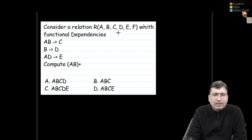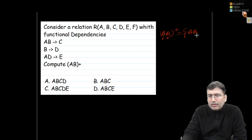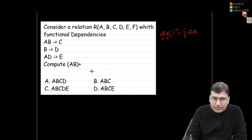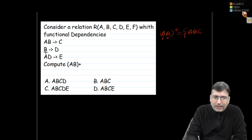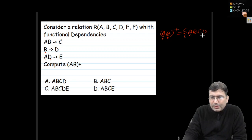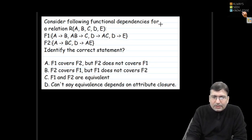Moving to the next question: a relation with six attributes A, B, C, D, E, F is given along with functional dependencies. Computing the closure of AB — starting with AB, AB implies C so we get C. From B we get D. From A and D we can find E. So the closure of AB gives all required attributes and the answer is C.